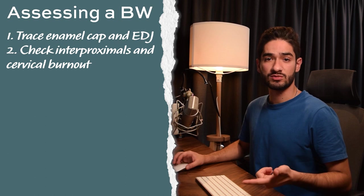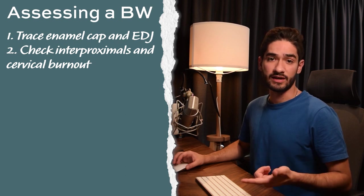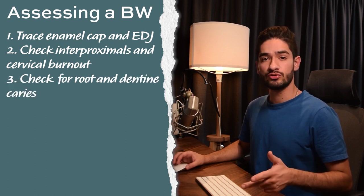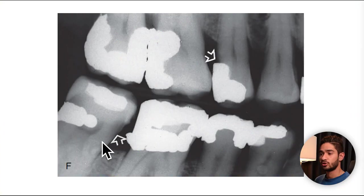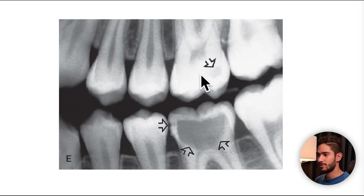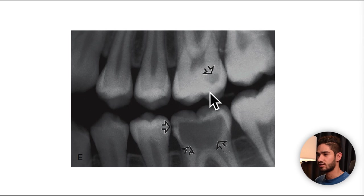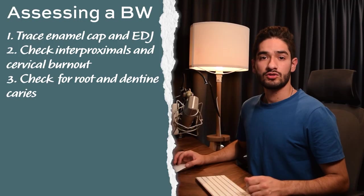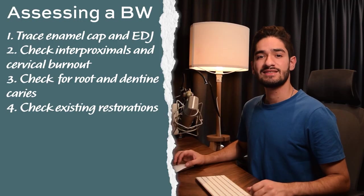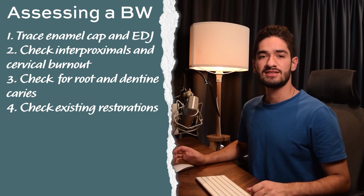Step three is to check for root caries and dentine caries like cervical and occlusal caries. On this radiograph you can see root caries on the lower right seven and upper right five. On this one you can just about see some occlusal caries, but if you adjust the contrast you can see it much better — this is why digital x-rays are so useful, because adjusting the contrast reveals so much more.